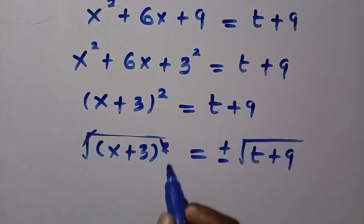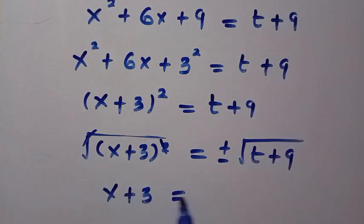When the square and square root cancel, we have x + 3 = ±√(t + 9).